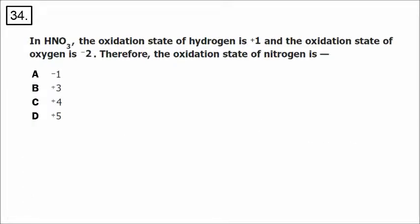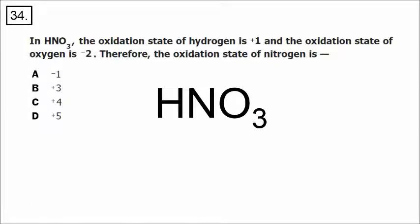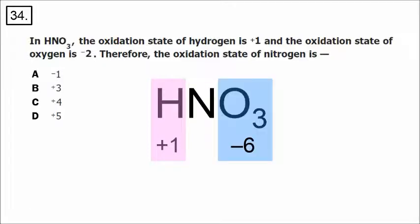In number 34, the word oxidation state means the charge on a particular element as it becomes an ion. What makes this different is we have three elements with a total compound charge of zero, and we're given the oxidation states of two of them: hydrogen is plus one and oxygen is negative two. With three oxygens, 3 times negative two is negative six. If the total charge is zero, and we have plus one and minus six, what should nitrogen's charge be so these add to zero? The correct answer is that nitrogen has an oxidation state of plus five.